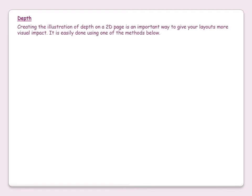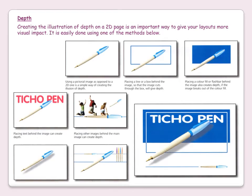Depth. Creating the illusion of depth on a 2D page is an important way to give a layout more visual impact. It is easily done using one of the following methods: placing a line behind the image gives the illusion of depth; placing a color fill or flash bar behind the image also creates depth if the image breaks out of the color fill; placing text behind the image can create depth; placing other images behind the main image can create depth; adding a drop shadow to the image can create depth; or using all of the above together.